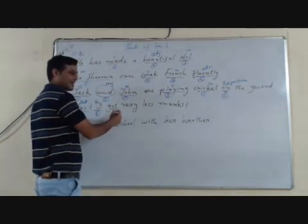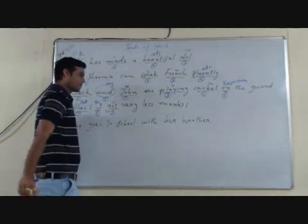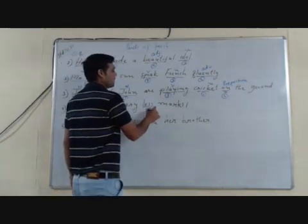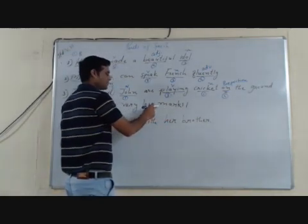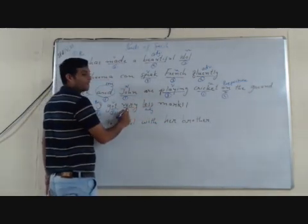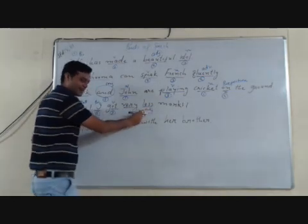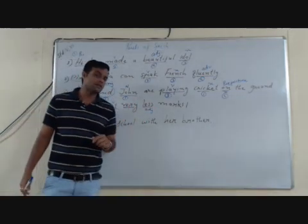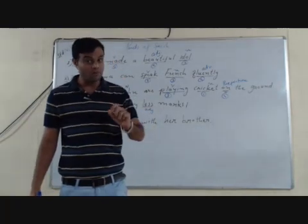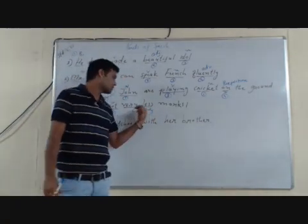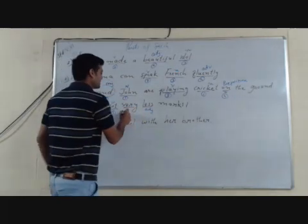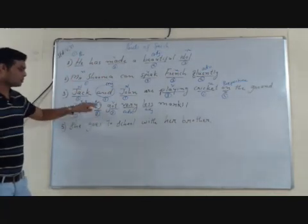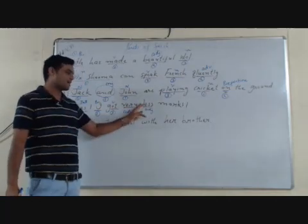'Got' shows action, so it is a verb. Now see 'very less marks' — 'less' is an adjective modifying 'marks'. And 'less' is also modified by the word 'very'. If you remember the definition of adverb: a word that modifies a verb, adjective, or another adverb is called an adverb. So 'very' is an adverb. In this sentence: 'alas' is an interjection, 'I' is a pronoun, 'got' is a verb, 'very' is an adverb, and 'less' is an adjective.